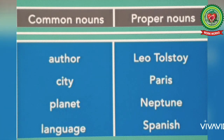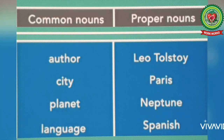On the other hand, when we talk about Leo Tolstoy, it refers to the name of a particular person, so it is a proper noun.